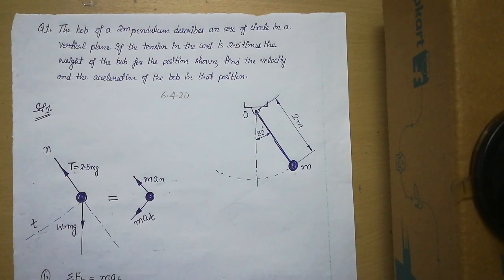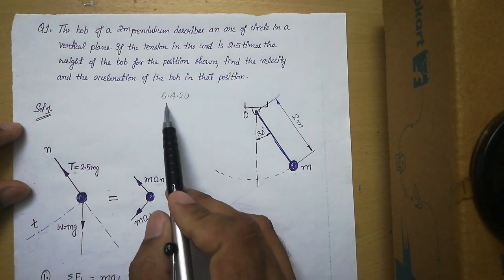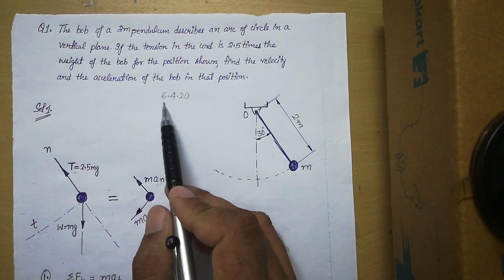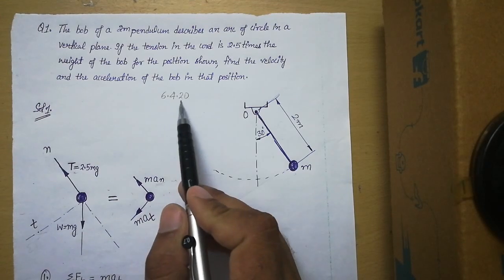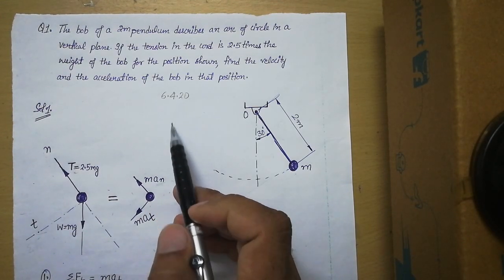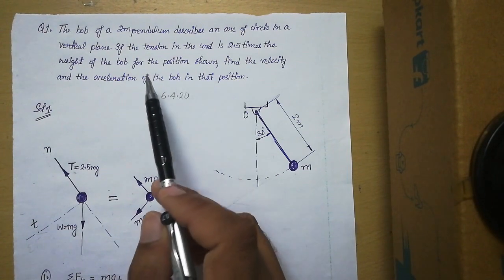Hello students, today we will talk about another numerical on unit number six, that is kinetics of particles. I have uploaded one file in your account; the name of that file is 6.4.20. In this file, two numericals are given, so I will discuss those two numericals through this video. This is the first numerical I am taking.